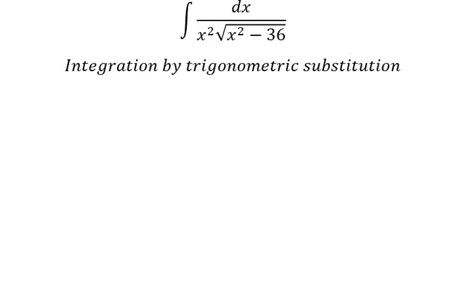So I need to put x equals to 6 secant of t, because if I put this one in here, you got 36 secant squared t. We can do factorization: 36 times secant squared t minus one. We change this to tan squared t, and later we simplify the square root and dx.